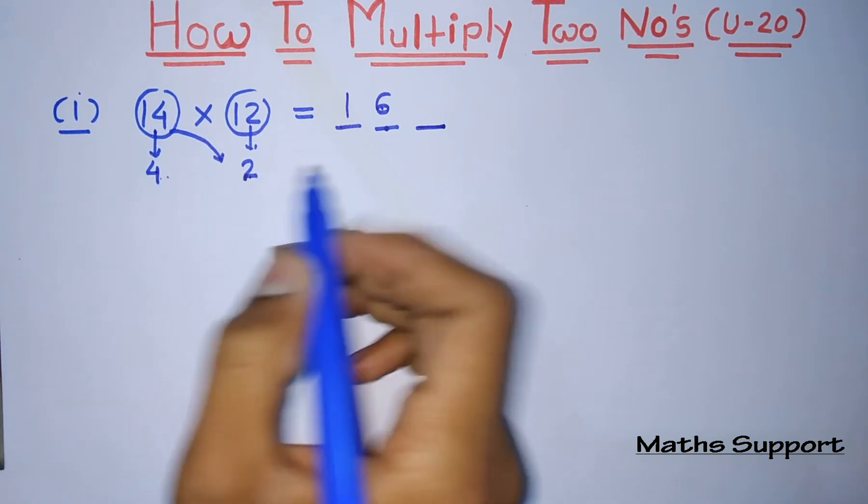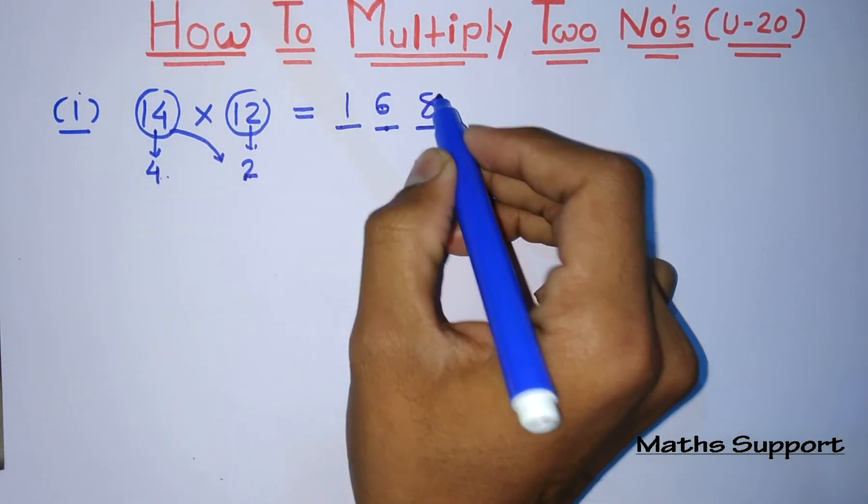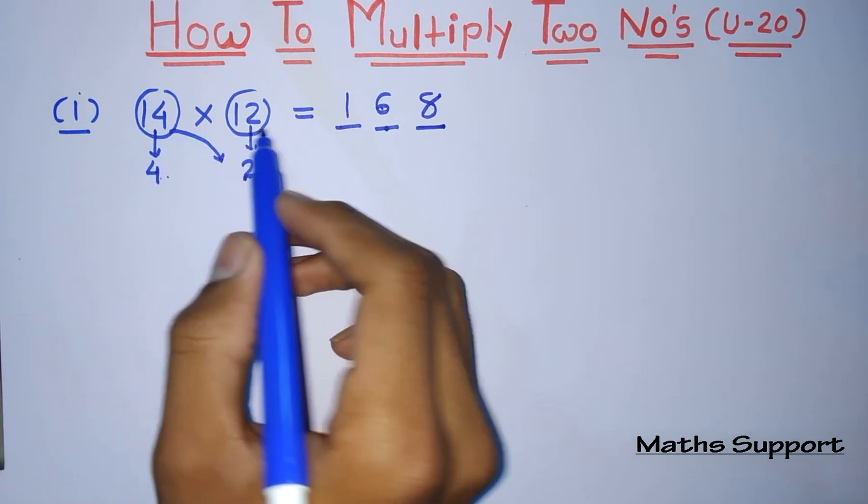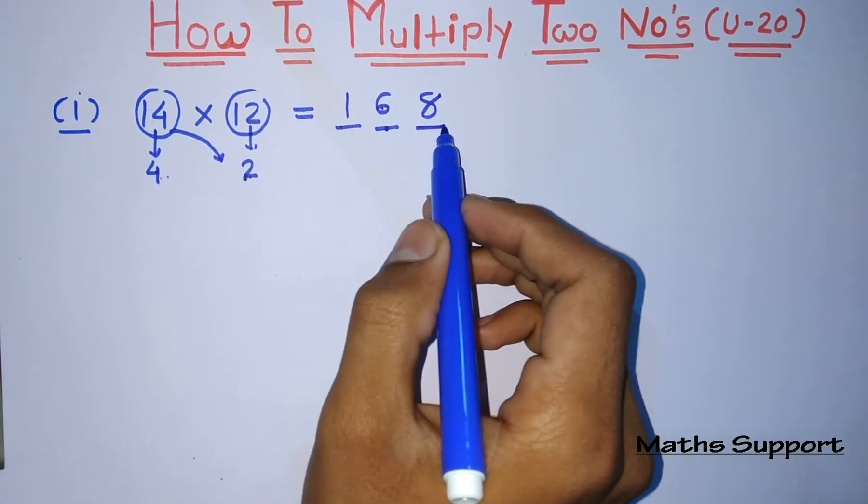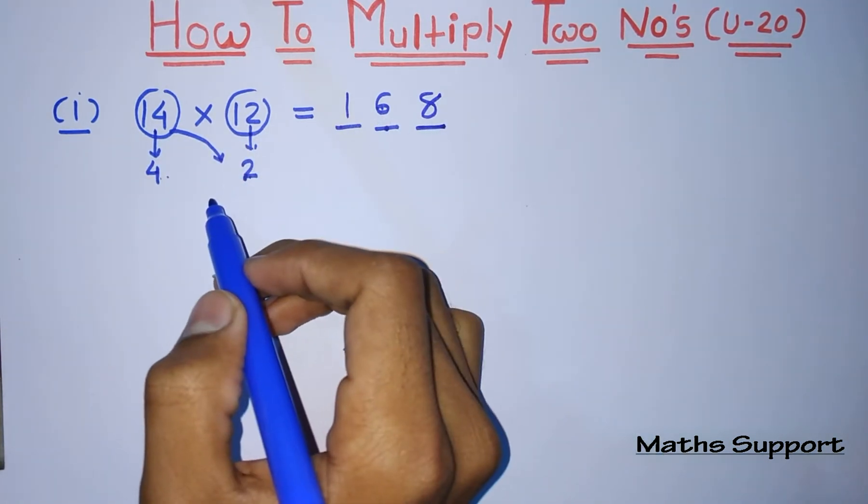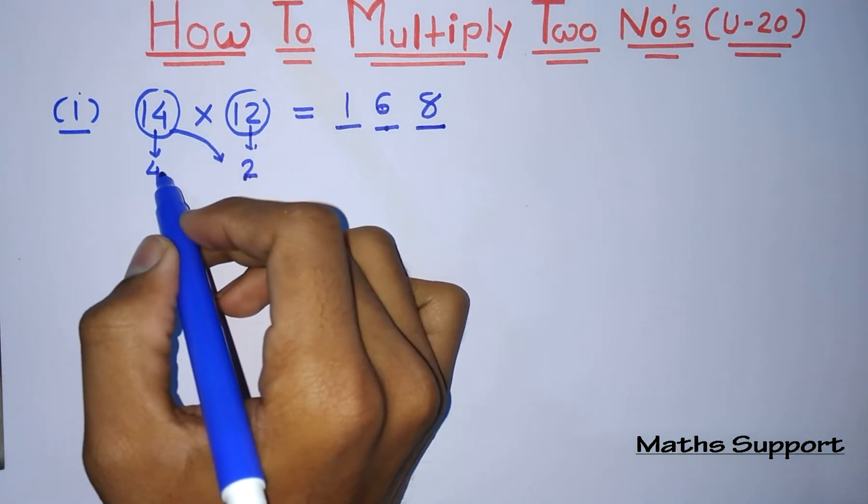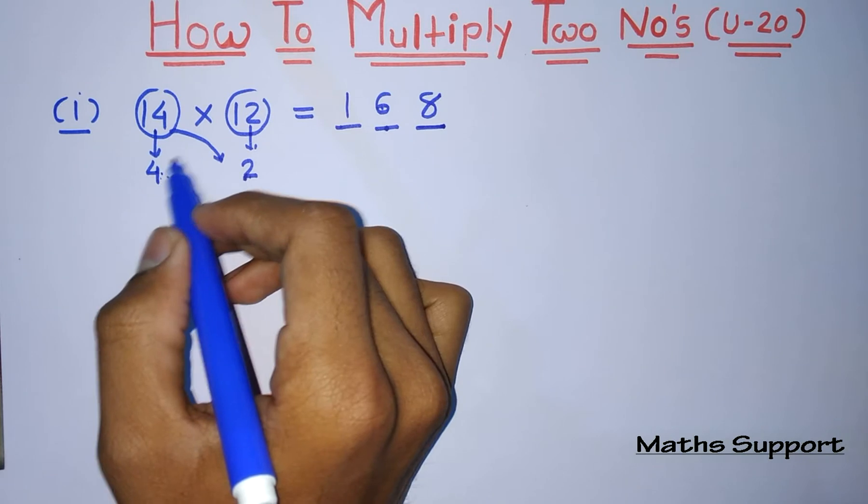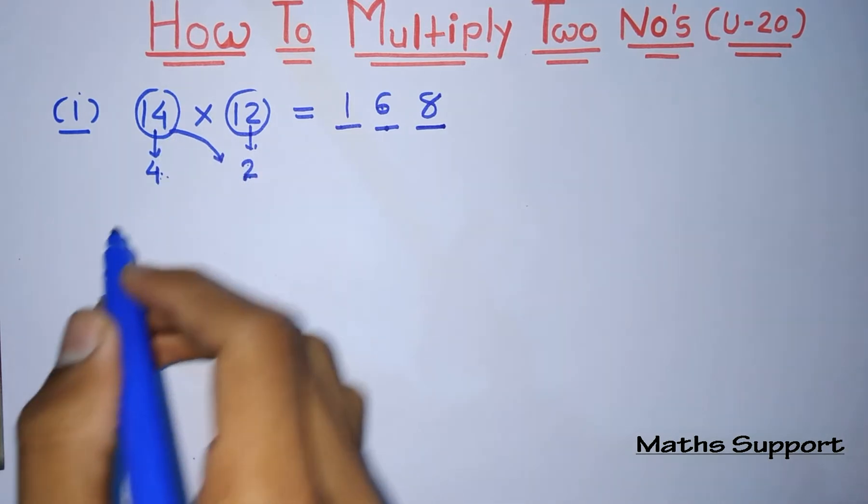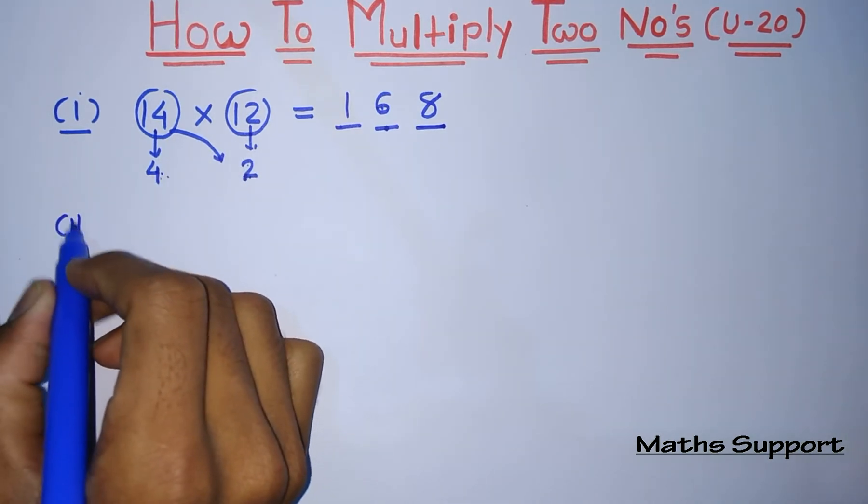So 14 into 12 is equal to 168. Now one thing you need to consider over here: if you are doing 12 plus 4, this is also the same as 14 plus 2. Suppose you are multiplying 19 into 11.